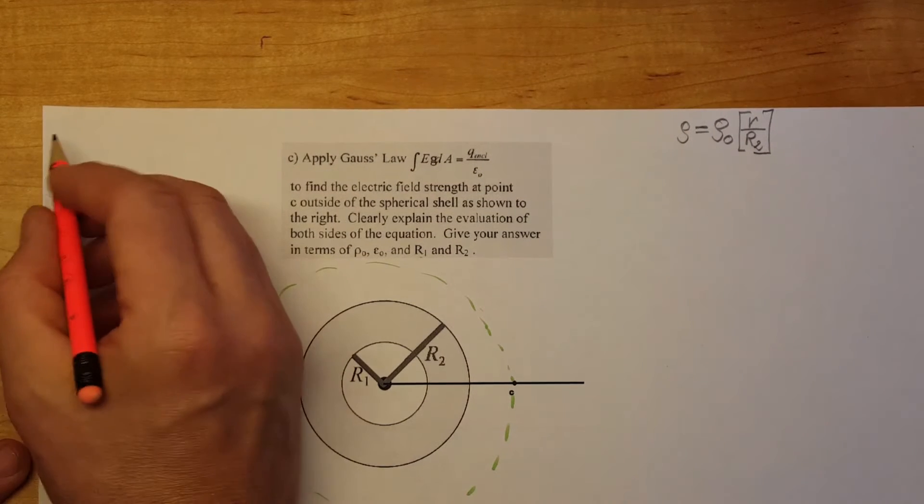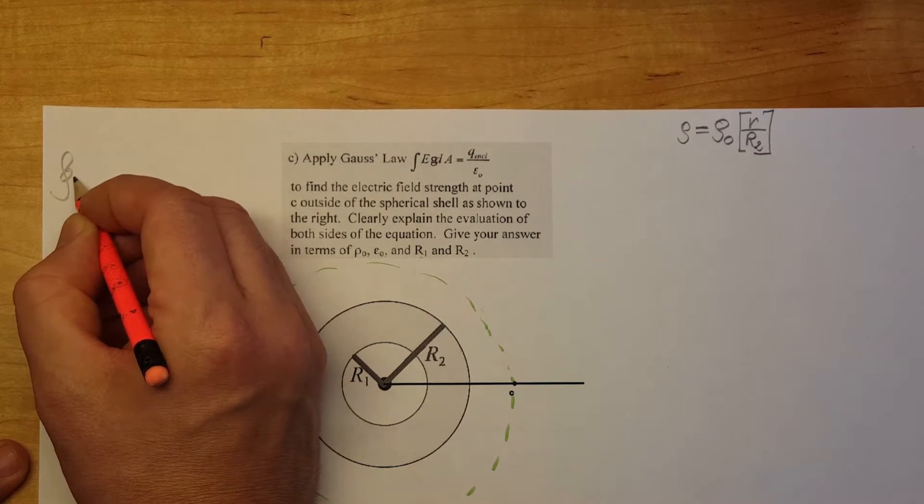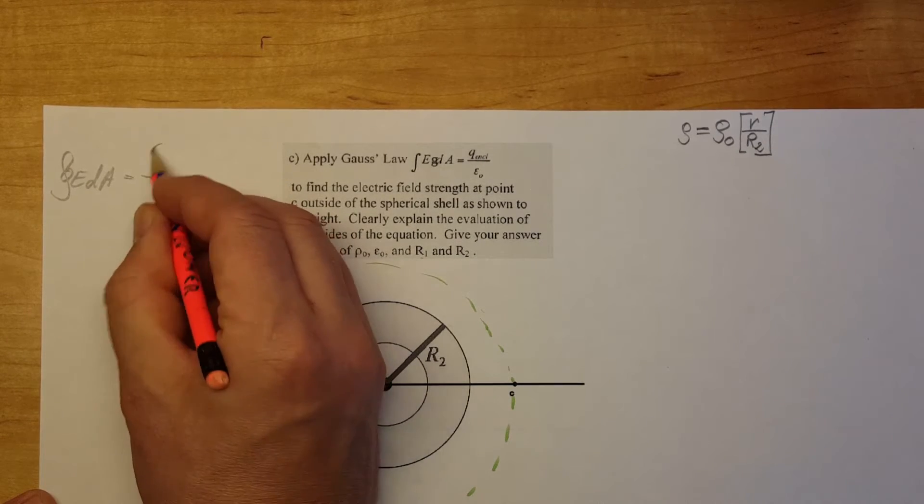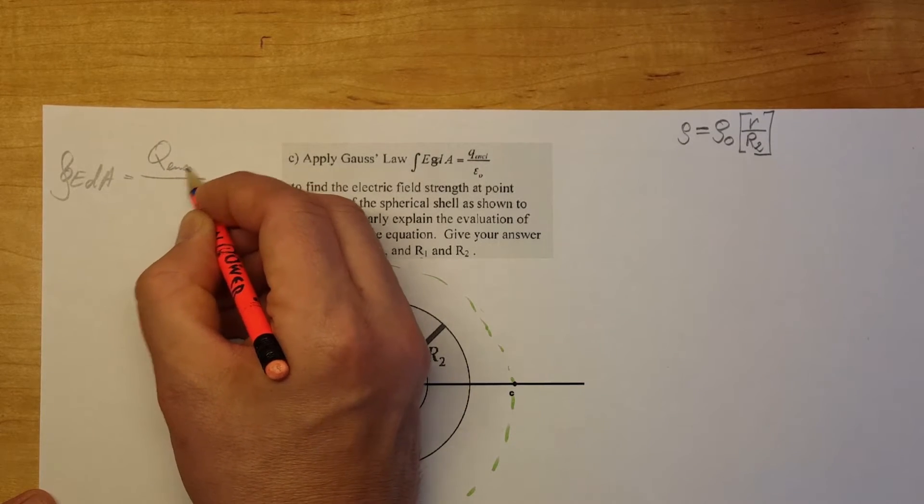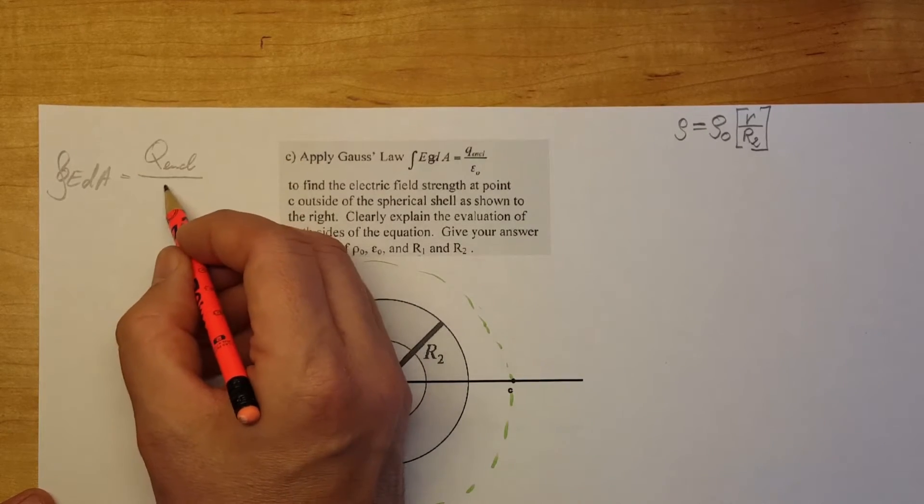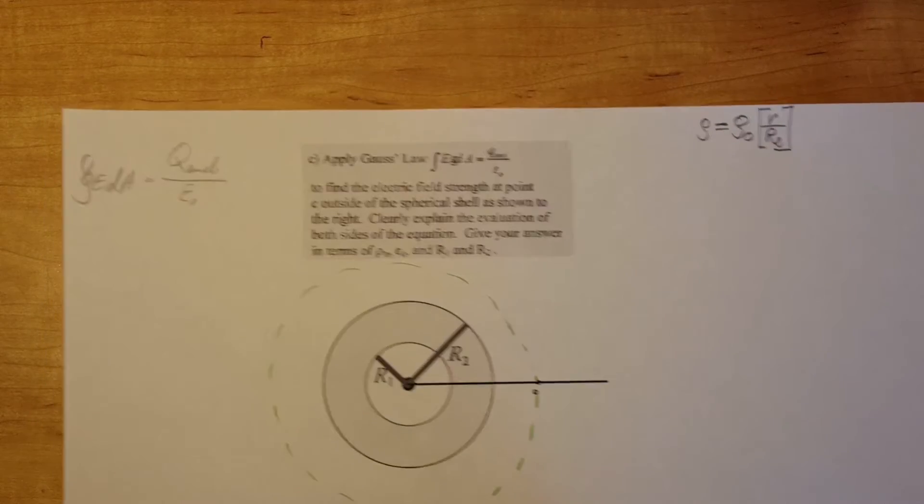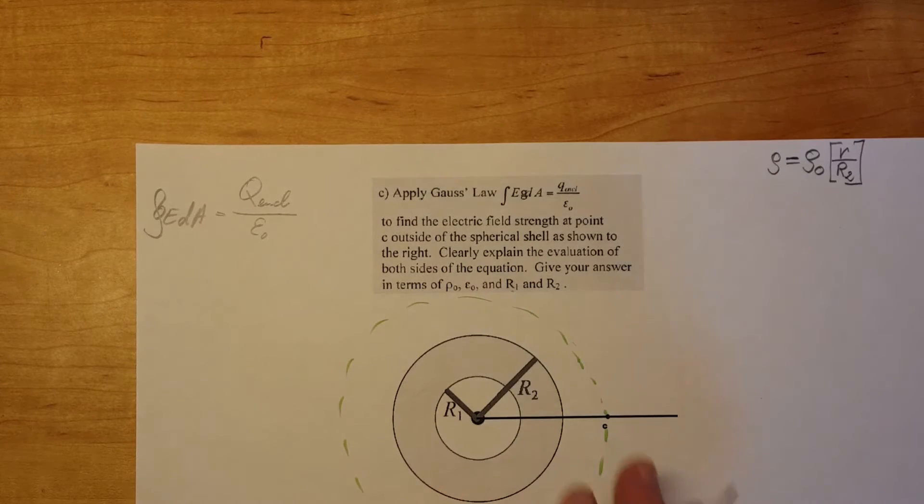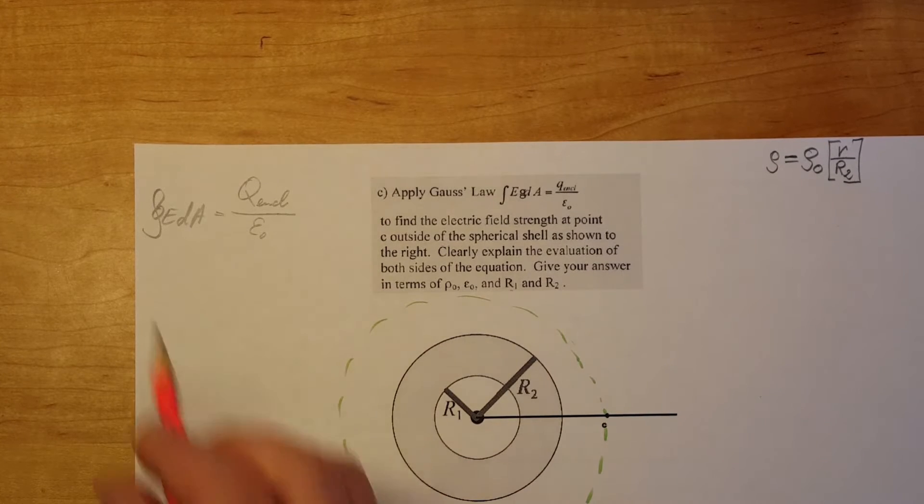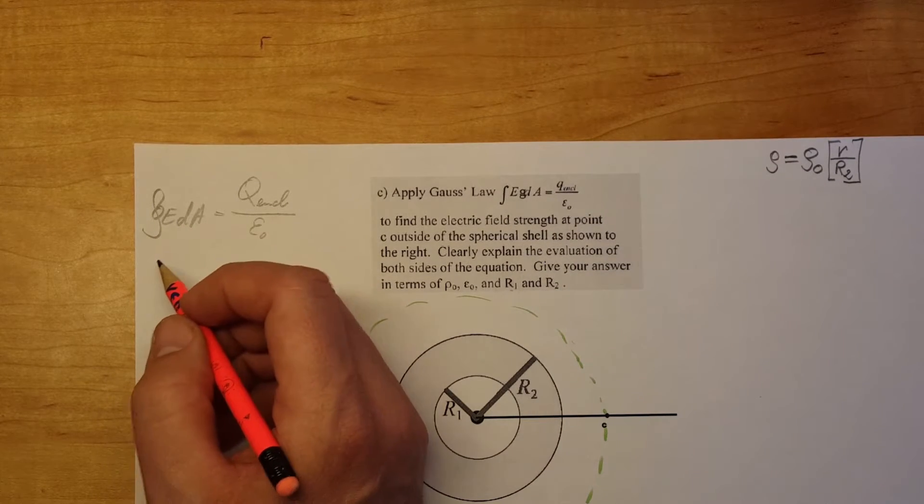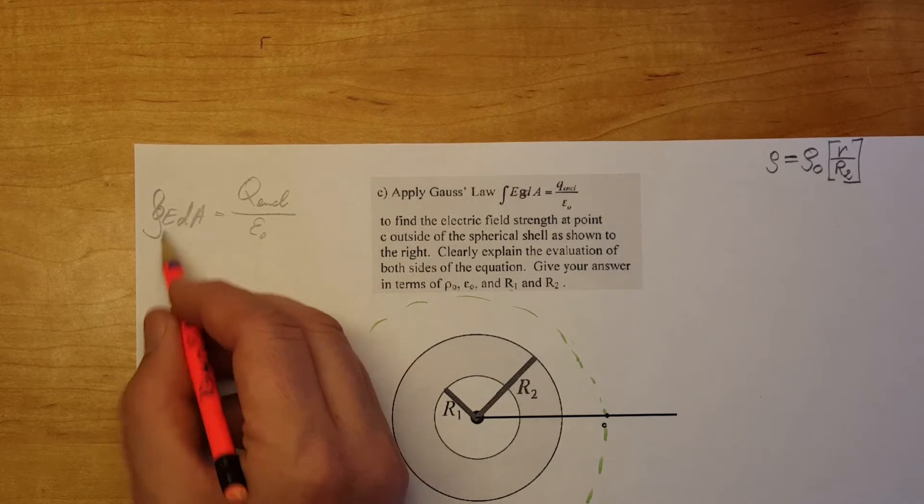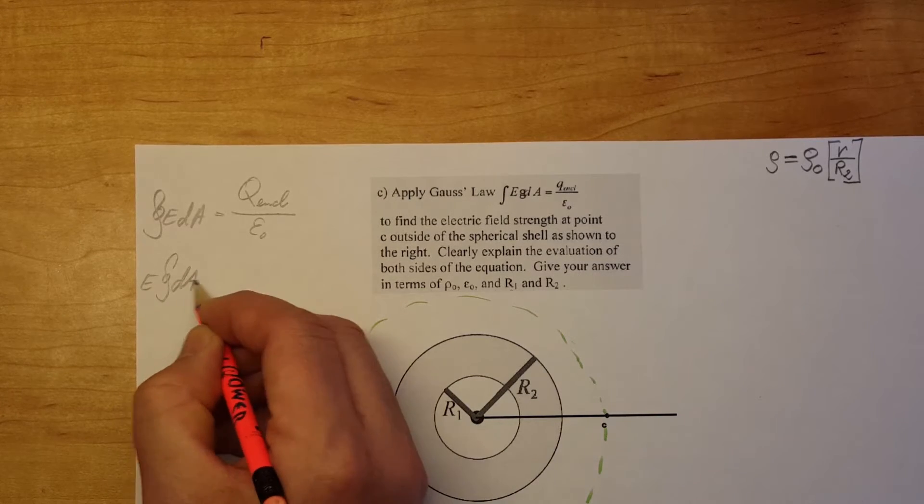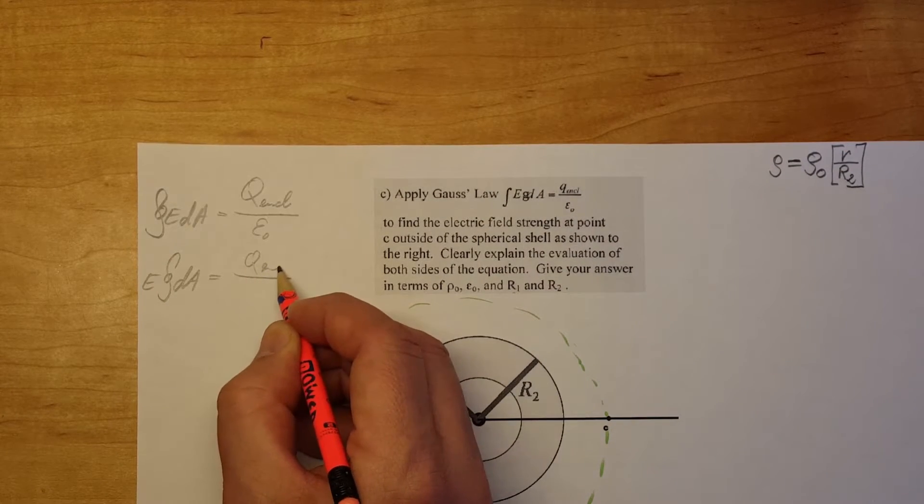So Gauss's law formula: integral of E times dA equals Q enclosed, charge enclosed, over E naught, the permittivity of space. Again, our shape is a nice sphere so we know how to find the area for that. E we're going to move in front of the integral since it's constant. E integral dA equals Q enclosed over E naught.